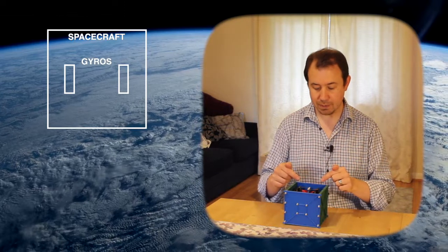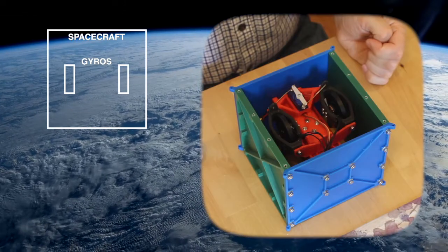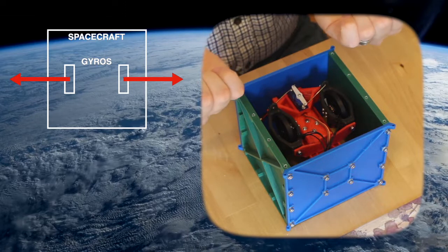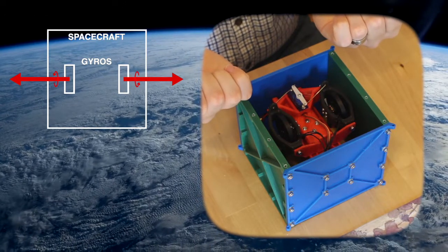Imagine that in a spacecraft we have two gyroscopes mounted back to back. Because they're effectively rotating in opposite directions, their angular momentum vectors cancel each other out.